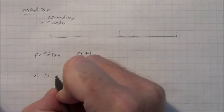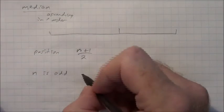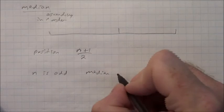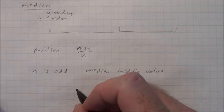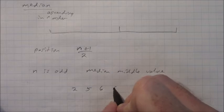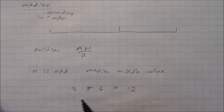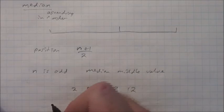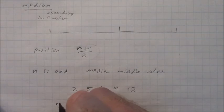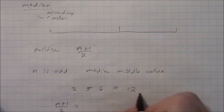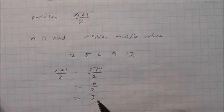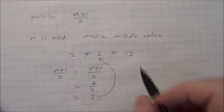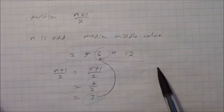Suppose n is odd. If we have the values 2, 5, 6, 9, and 12, there are five values. Using the position formula: n + 1 over 2 = 5 + 1 over 2 = 6 over 2 = 3. That's the position, not the value itself. So we count to the third value: one, two, three. When n is odd, the median in this case is 6.